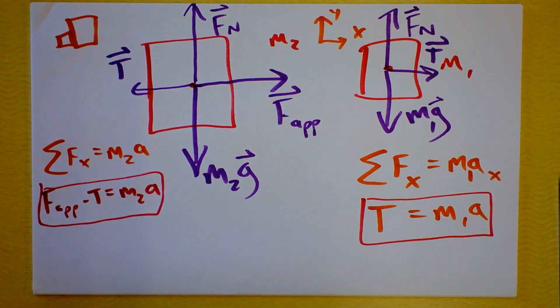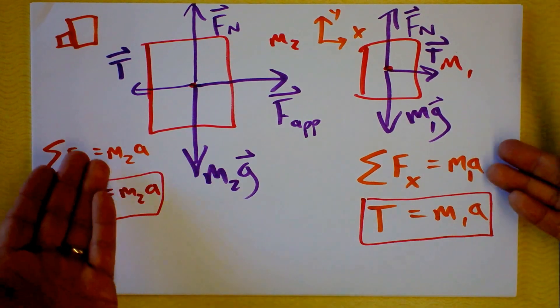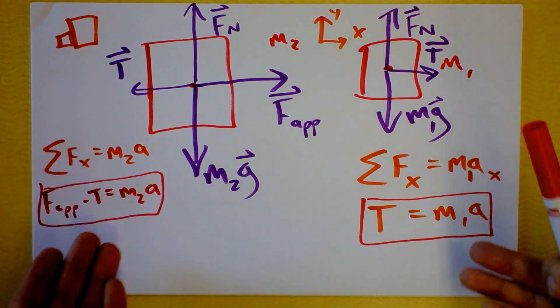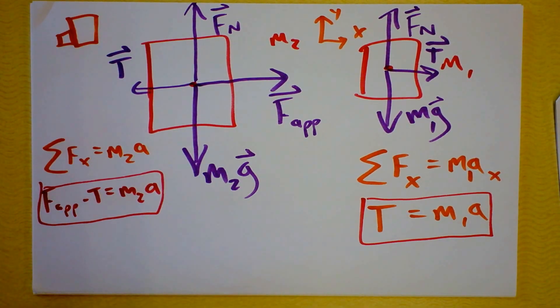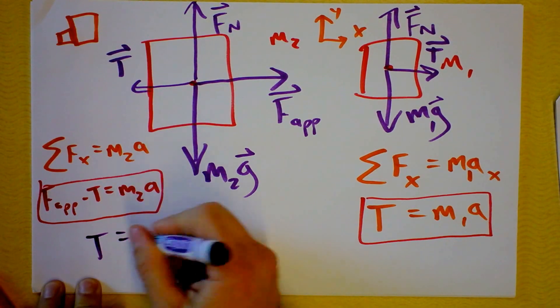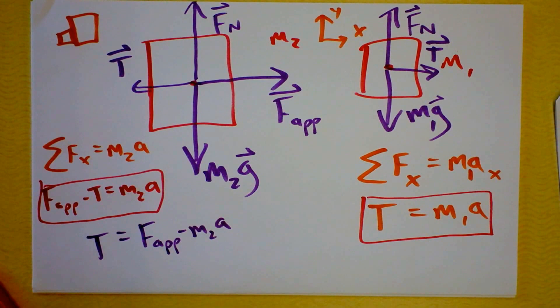Every time a question asks you about force or acceleration, you should make a free body diagram for everything involved. Then you should write down Newton's Second Law and then you should solve those equations. It says, what is an equation for tension? So that makes me feel like they want us to solve this for tension. Tension then is F applied minus m2a. Is that true? Did I make a mistake with my algebra? Joey's checked it and it is true.